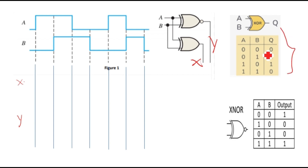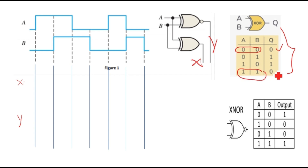In the XOR truth table, when both inputs are the same — 0,0 or 1,1 — you get output 0. When the inputs are different, you get output 1. So for the XOR gate: same inputs give output 0, different inputs give output 1. Let's trace through the waveform — A is 0 and B is 0.